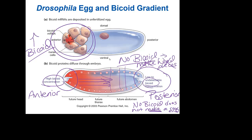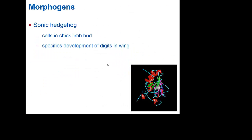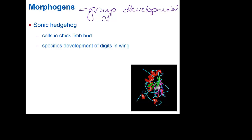You can also see that dorsal and ventral are set up here, which is actually regulated by other proteins. We're focusing on bicoid for now. One particular morphogen — and we'll call morphogens a group of developmental compounds for now.